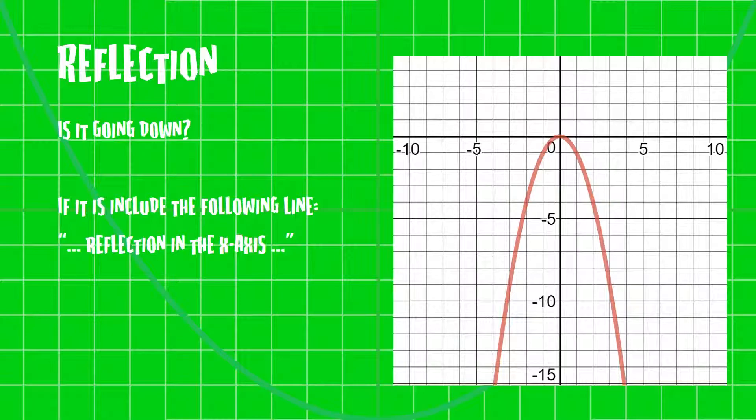This is shown in the diagram. Algebraically, this is just whether or not the a-value is positive or negative. When this is written, it states: the graph of y = x² has gone through a reflection in the x-axis.